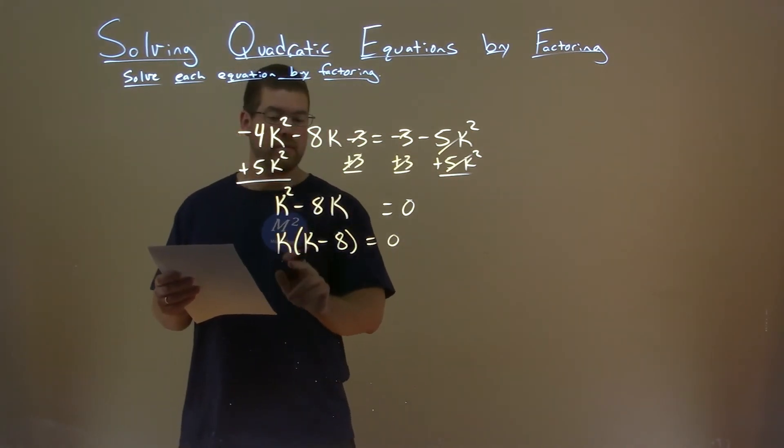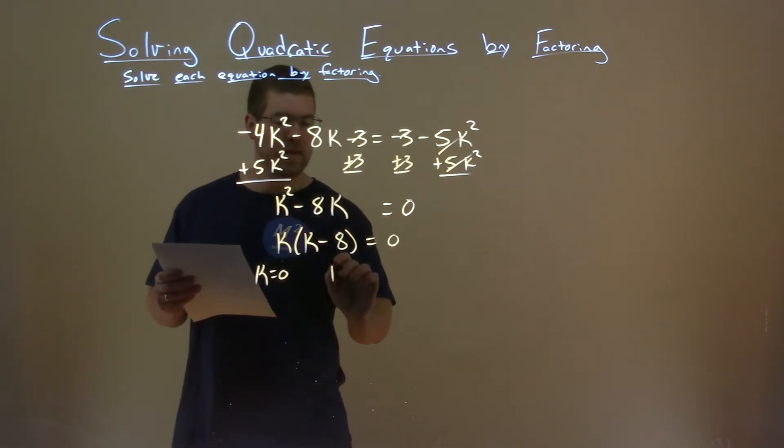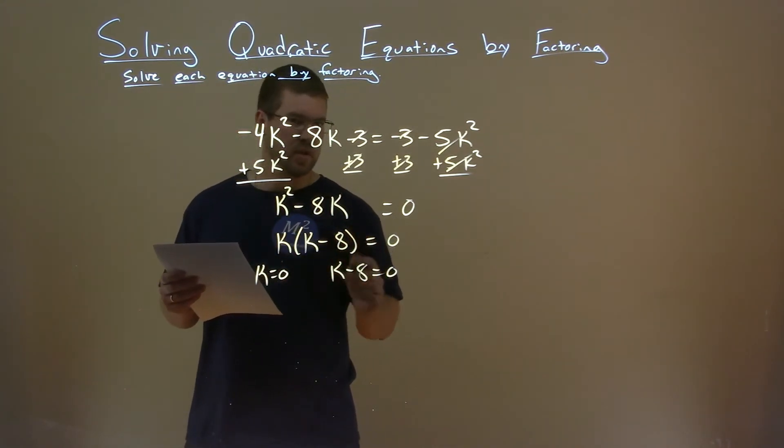So now we're being multiplied we can set both parts equal to 0. K equals 0 and then k minus 8 equals 0. And we're going to solve for k.